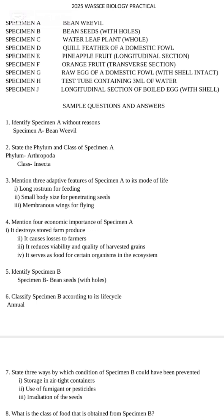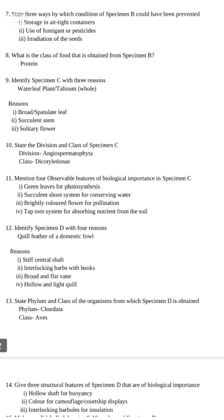Number 5: Identify specimen B — it is a bean seed with weevils. Number 6: Classify specimen B according to its life cycle — it is annual. Number 7: State three ways by which the condition of specimen B could have been prevented — storage in airtight containers, use of fumigant or pesticides, and irradiation of seeds. Number 8: What class of food is obtained from specimen B? — protein. If I'm going too fast, please pause or rewind. Make sure you take a pen and jot these down.